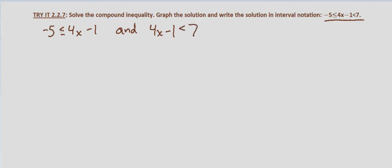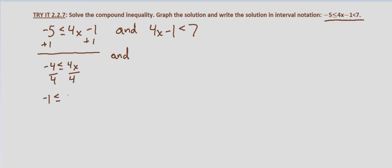Solving the left hand side of the compound inequality, we add 1 to both sides and end up with negative 4 is less than or equal to 4x. Divide both sides by 4 and we get negative 1 is less than or equal to x. To put the inequality on the left hand side we switch the direction of the inequality, so it's x is greater than or equal to negative 1, and these are still AND.